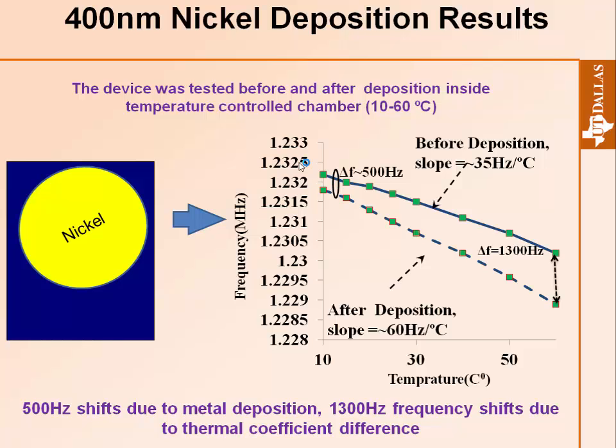We then ran the same test again. The curve before deposition also shows a frequency shift due to temperature — temperature affects the stiffness of the beam, causing a frequency shift. After deposition, there is an offset shift at every temperature point, because of the intrinsic stress between the nickel layer and the silicon membrane. Additionally, the slope changed from 35 Hz per degree to 60 Hz per degree, due to the difference in thermal expansion coefficient between the nickel layer and the silicon membrane.